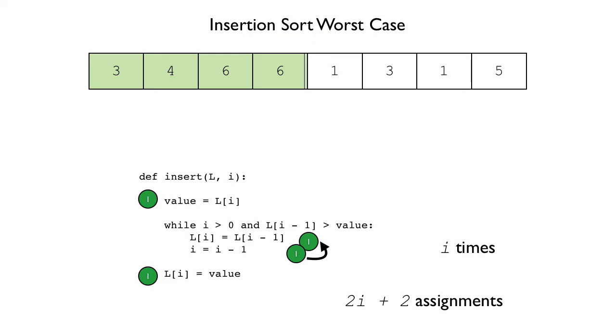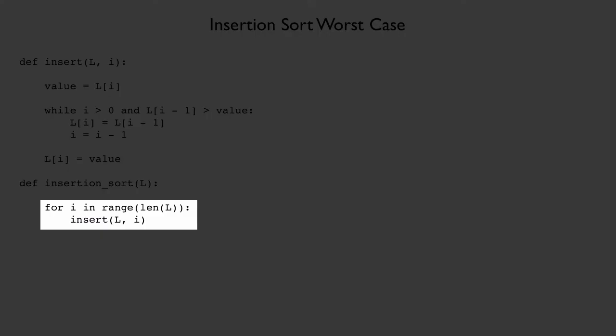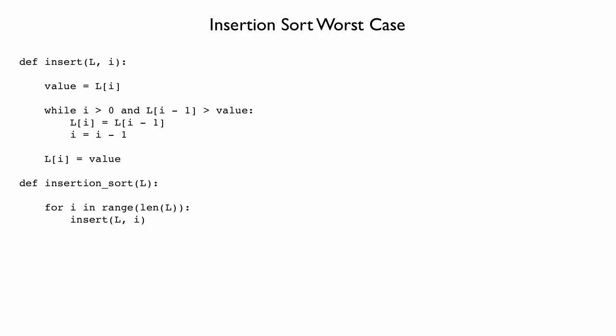Now, when we consider the function insert within insertion sort, the first time we call insert, i is 0; the second time it's 1, and so on. What is the largest value that i is going to be? i is determined by the range of len(l) — the length of the list l — which includes all numbers from 0 to the length of the list minus 1, or all possible indices in the list. So the last value of i in insertion sort is going to be length of the list minus 1.